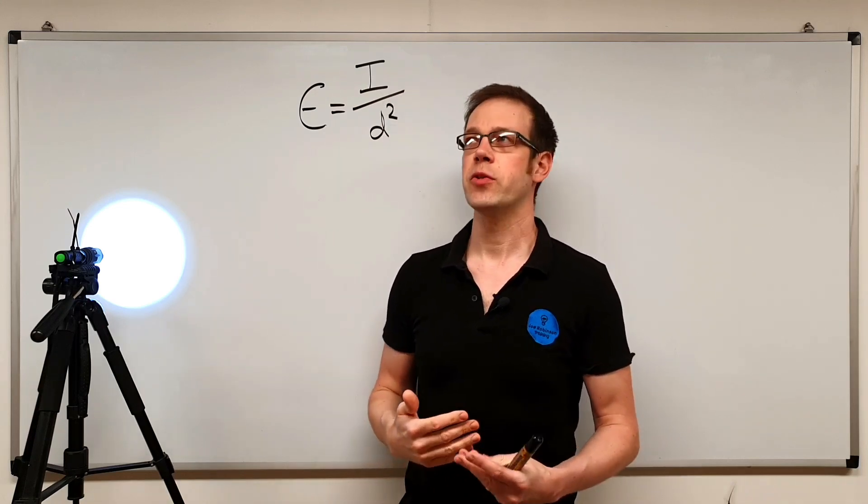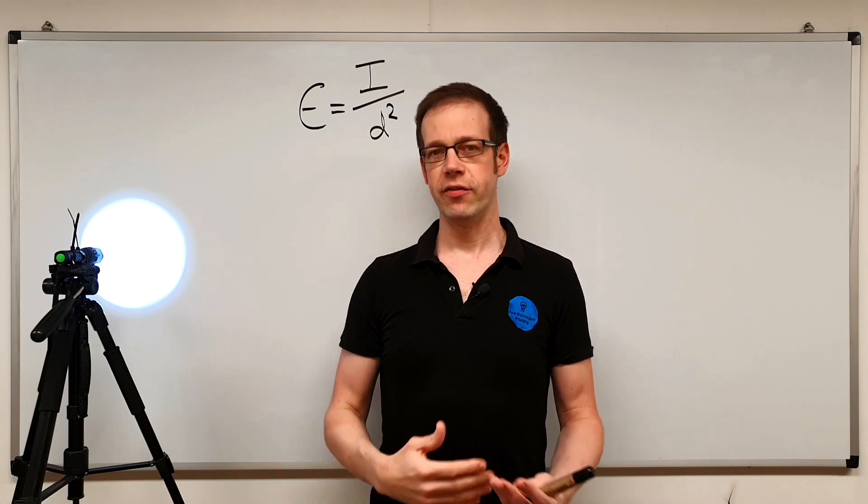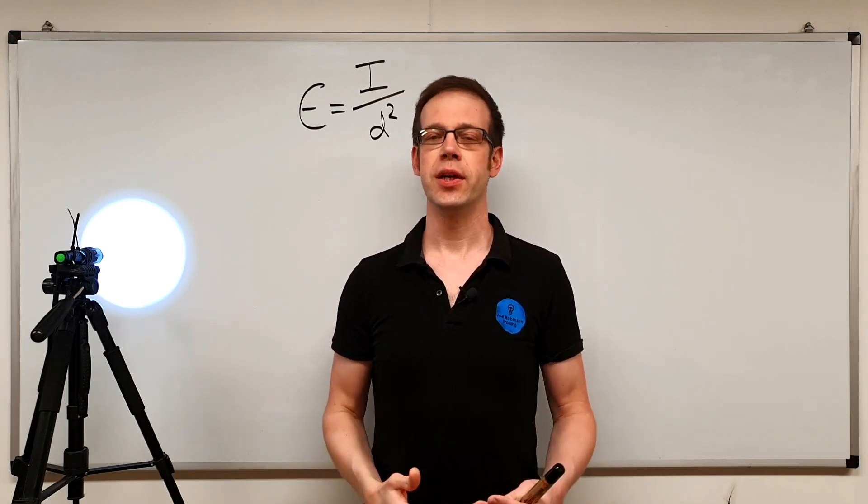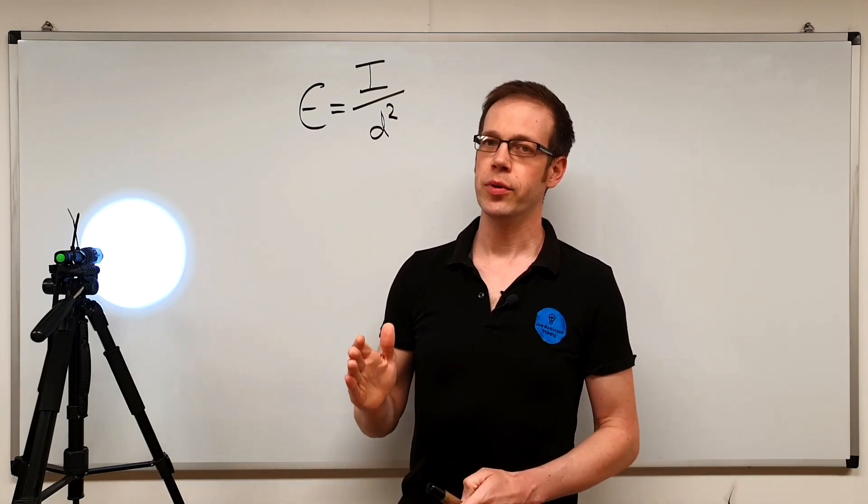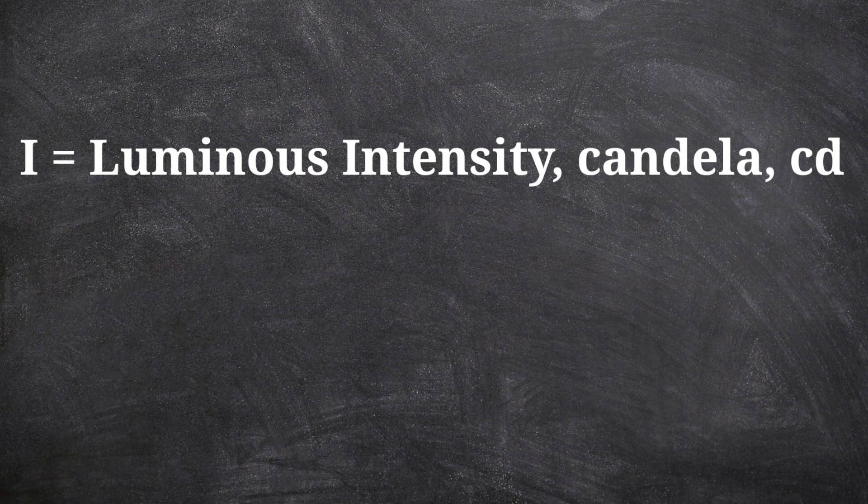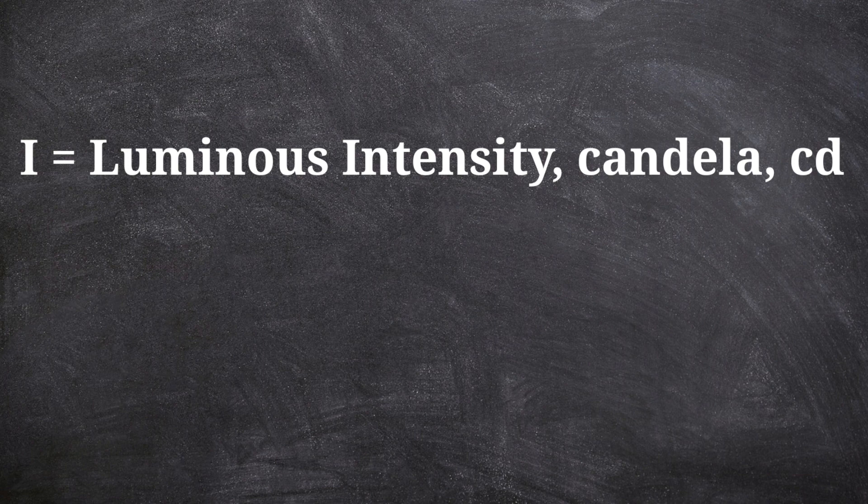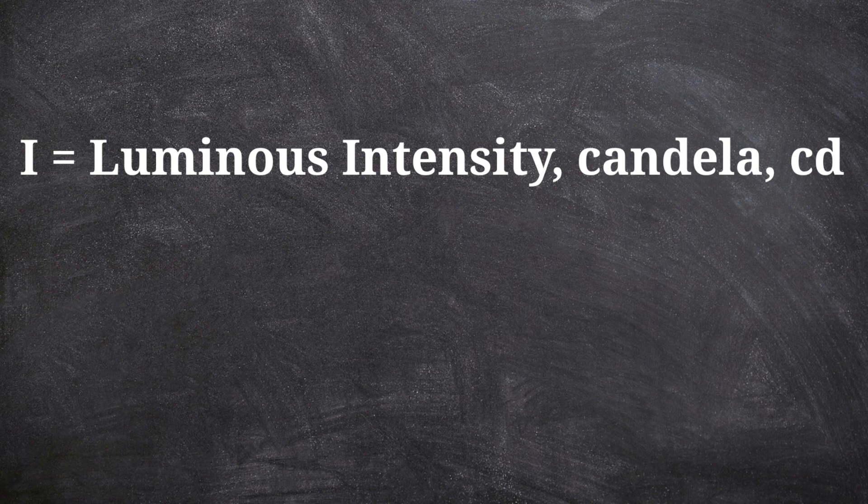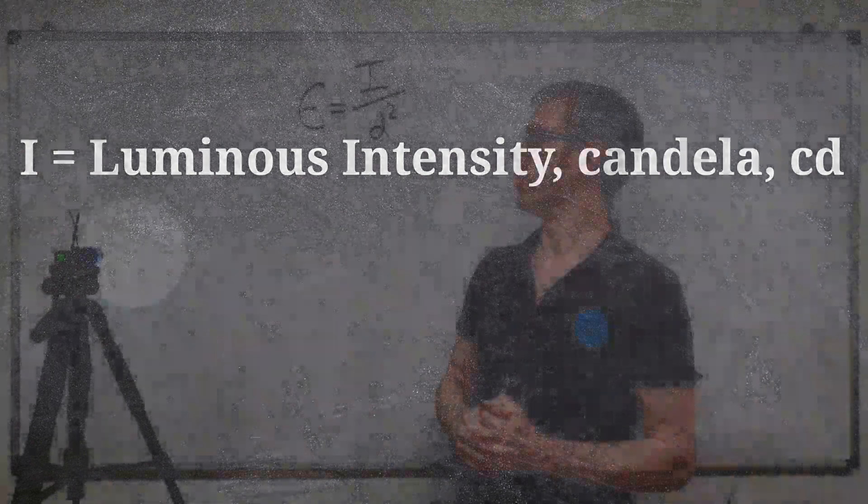In future videos we're going to explore a slightly different way of measuring light that works better in certain circumstances, but this is really the starting point for us. I is luminous intensity. The unit that it is measured in is the candela. You can see kind of buried in there a word that looks something like candle, which is something that we use for a light source. The unit symbol is cd.